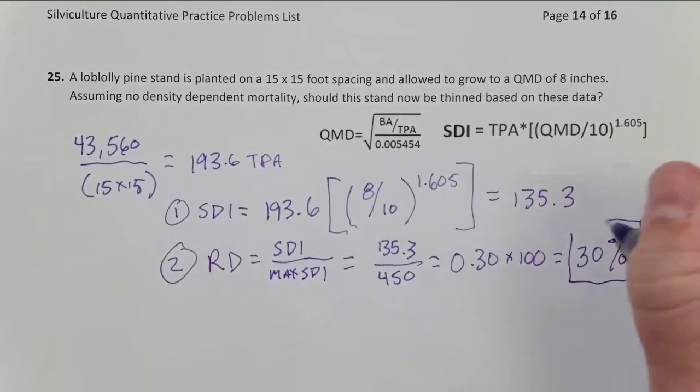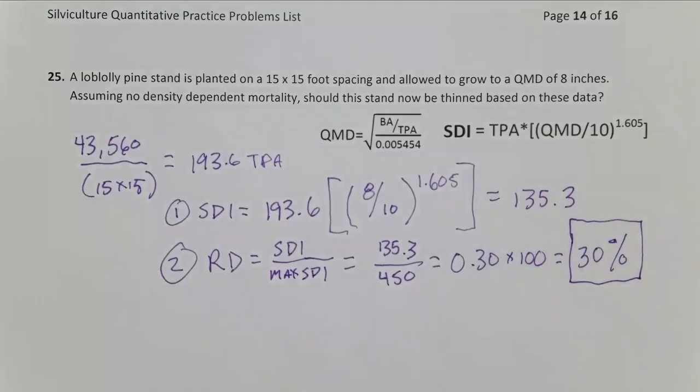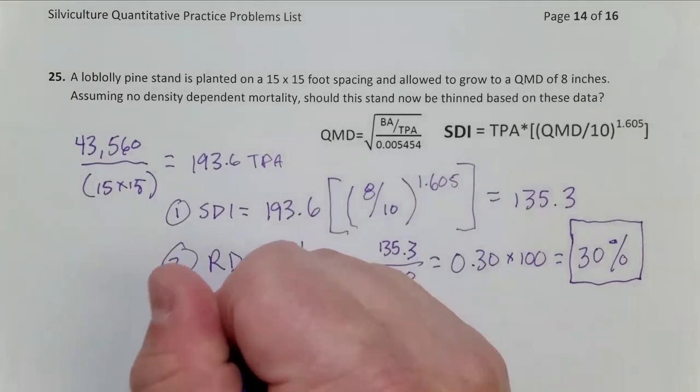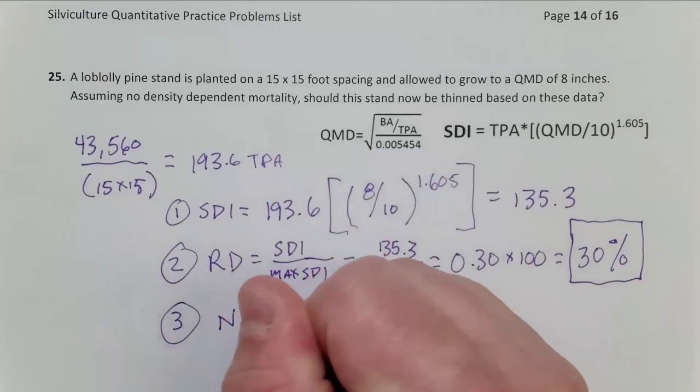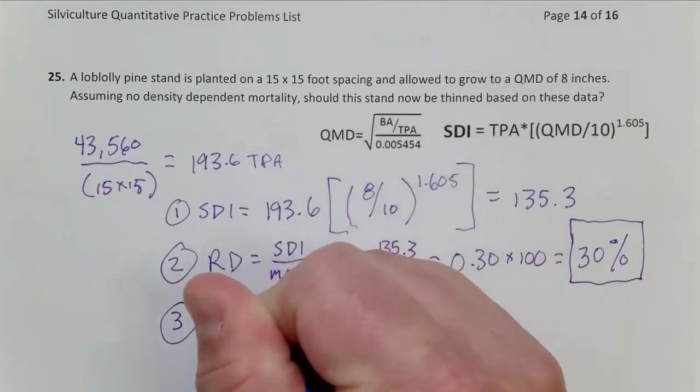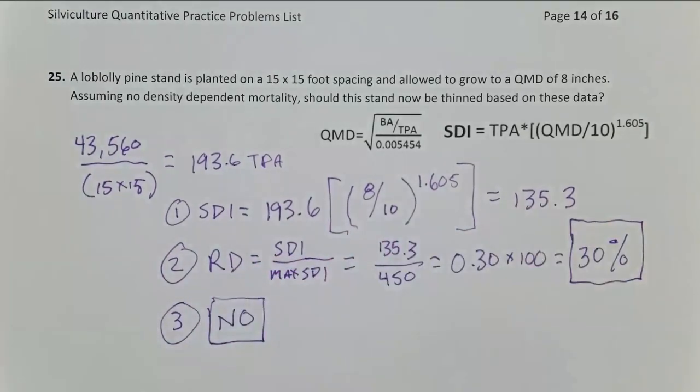So that's the key number we needed for all this. And so now step three, interpret. We know the management zone for Southern Yellow Pines is between 30 and 45% relative density. Here we see this stand is at the lower limit of the management zone. So should it be thinned? No. That would leave it understocked. It should be allowed to grow until it gets above 45%, probably closer to 55%.